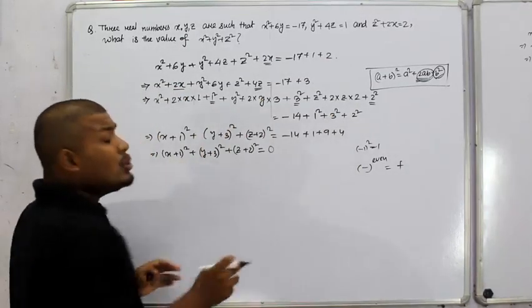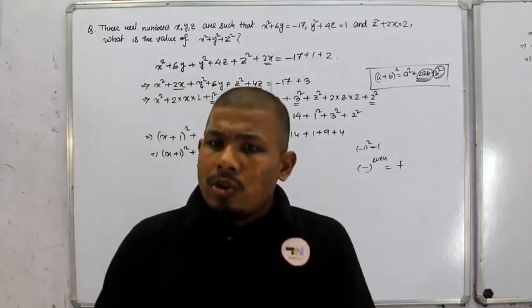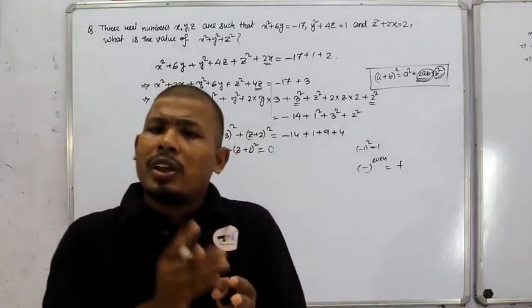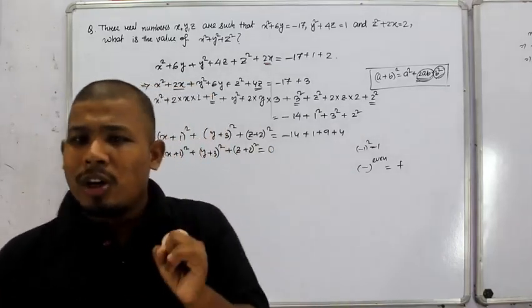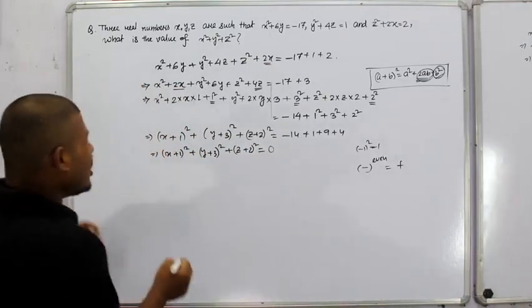The only way for a sum of squares to equal 0 is if each quantity equals 0. If you have positive quantities summing to 0, each value must be 0.